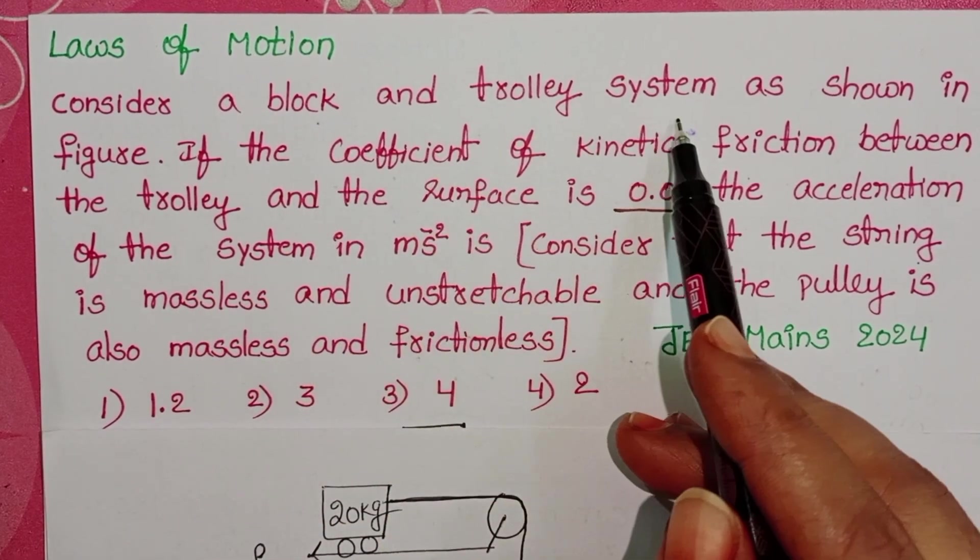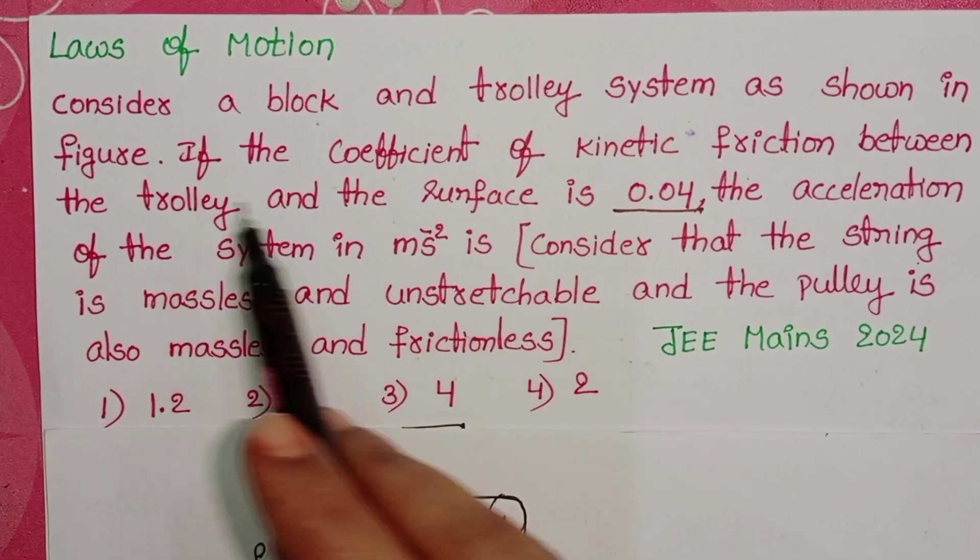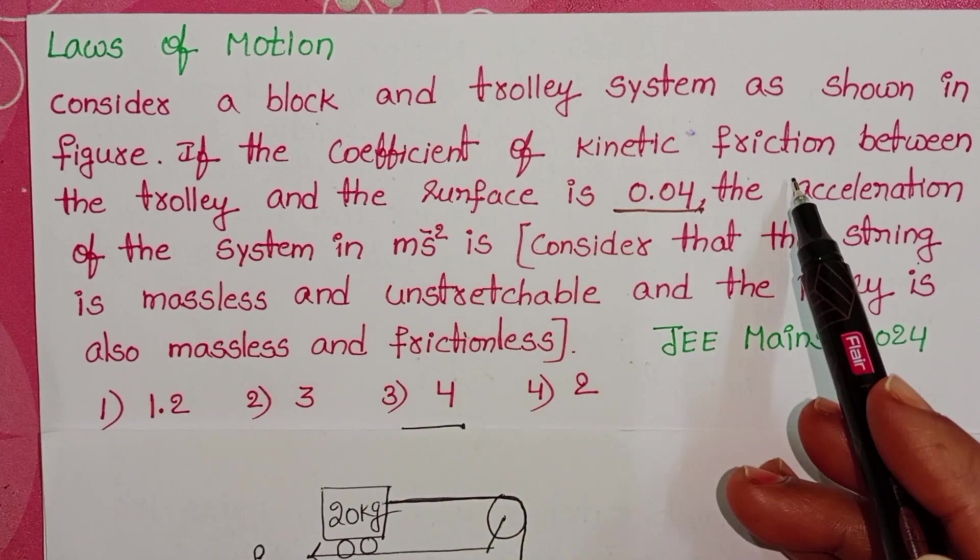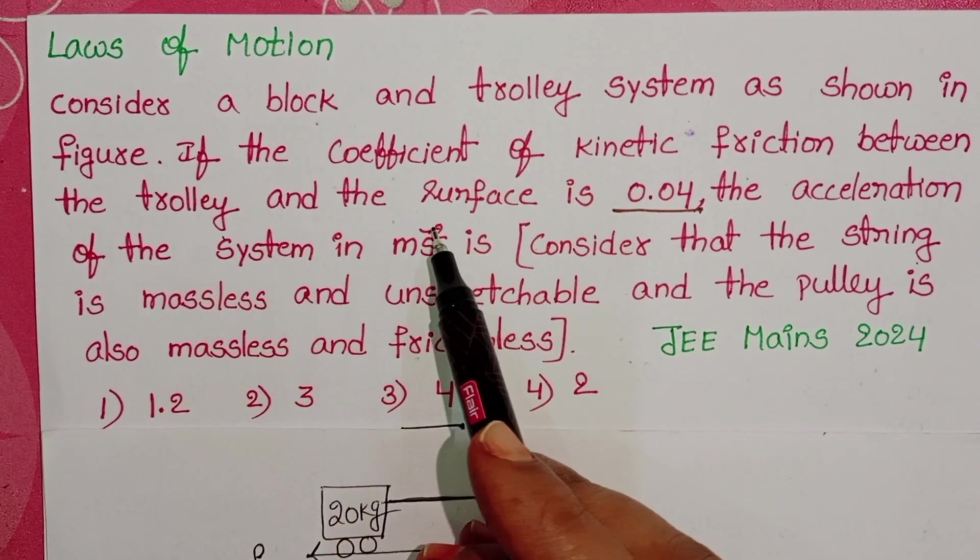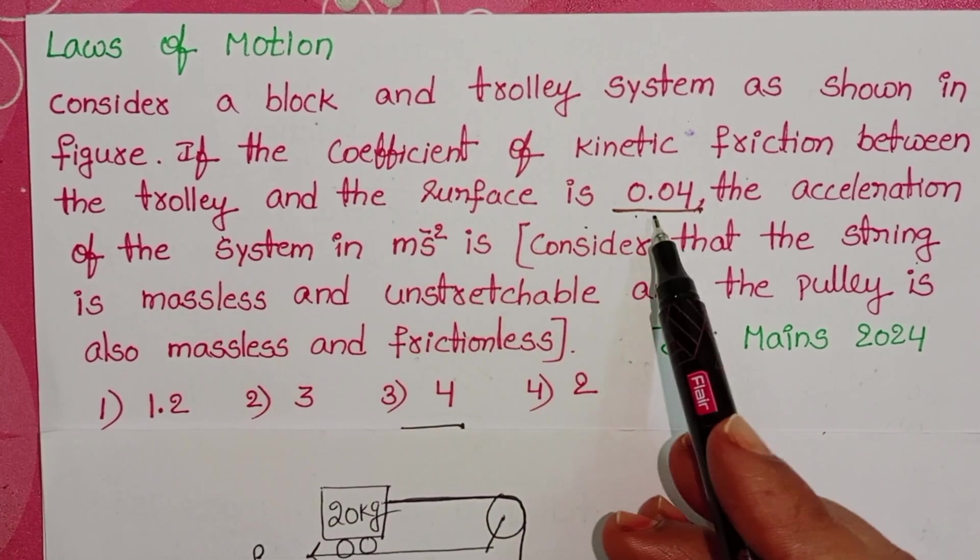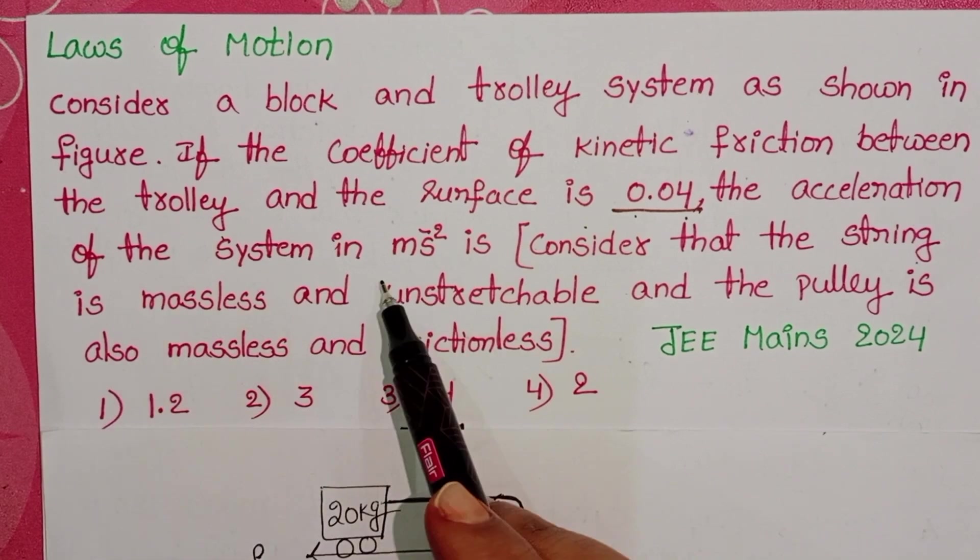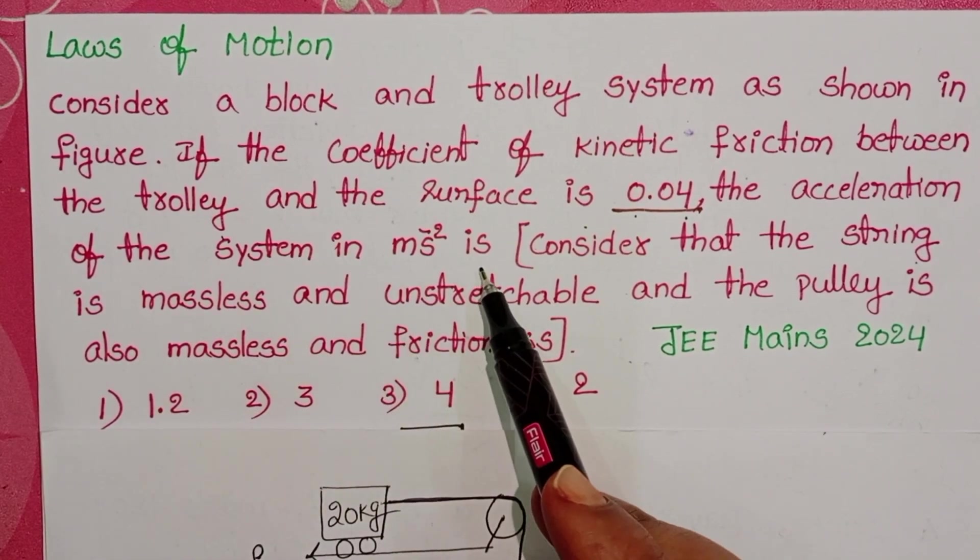Consider a block and trolley system as shown in the figure. If the coefficient of kinetic friction between the trolley and the surface is 0.04, find the acceleration of the system in meters per second squared.